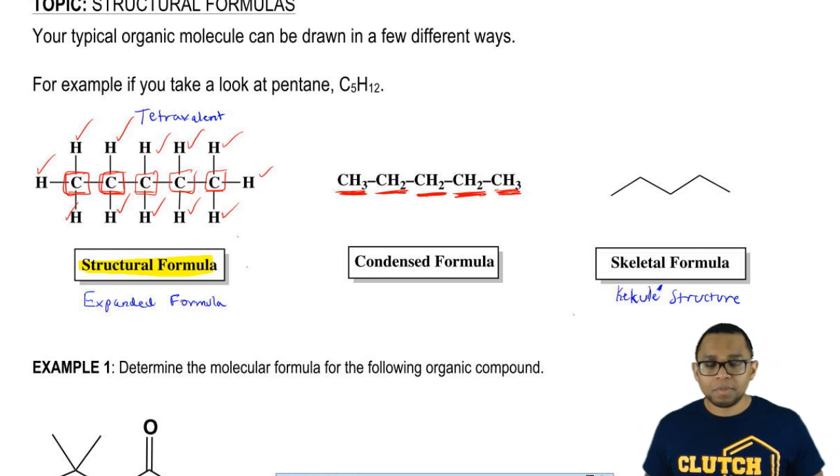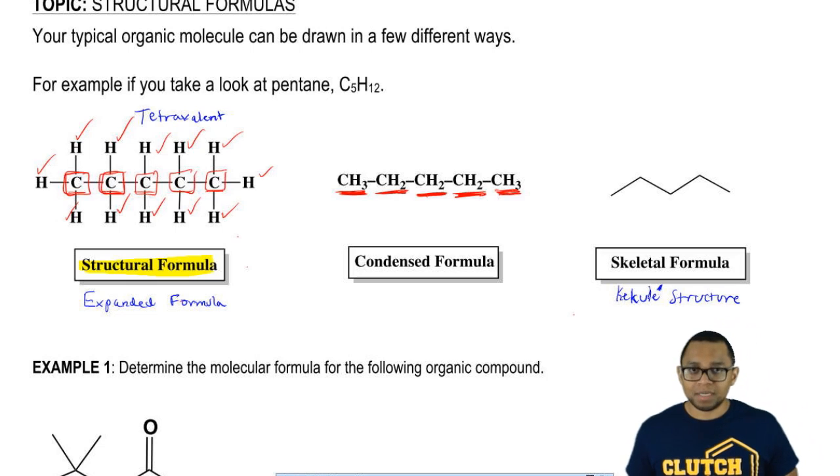So K-E-K-U-L-E with a little accent mark above the E. Kekule or Kekule depending on which professor you get because they pronounce them differently. That's a skeletal formula. Now, how do we read something like this?